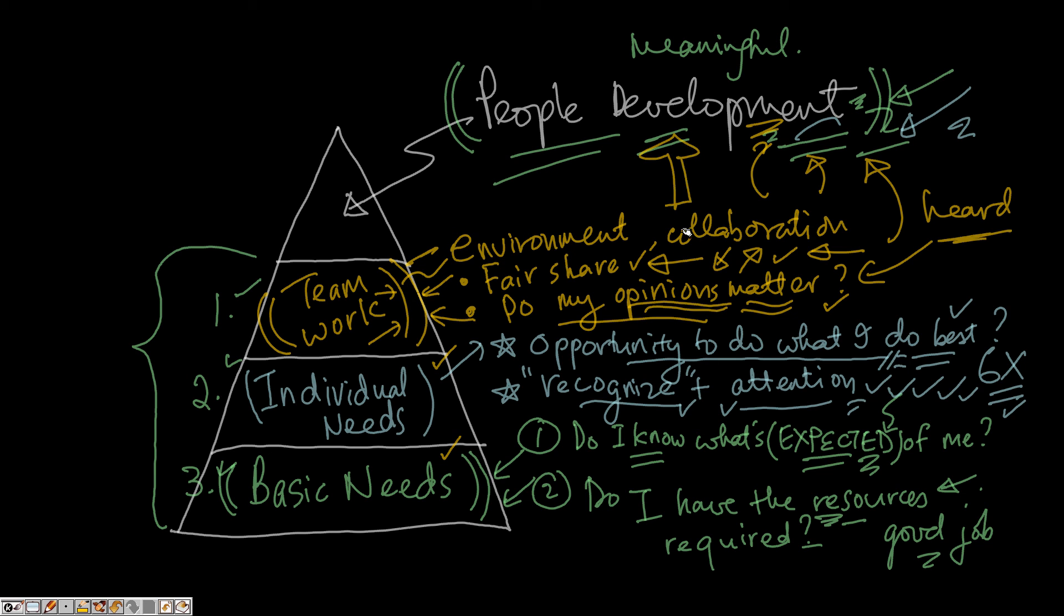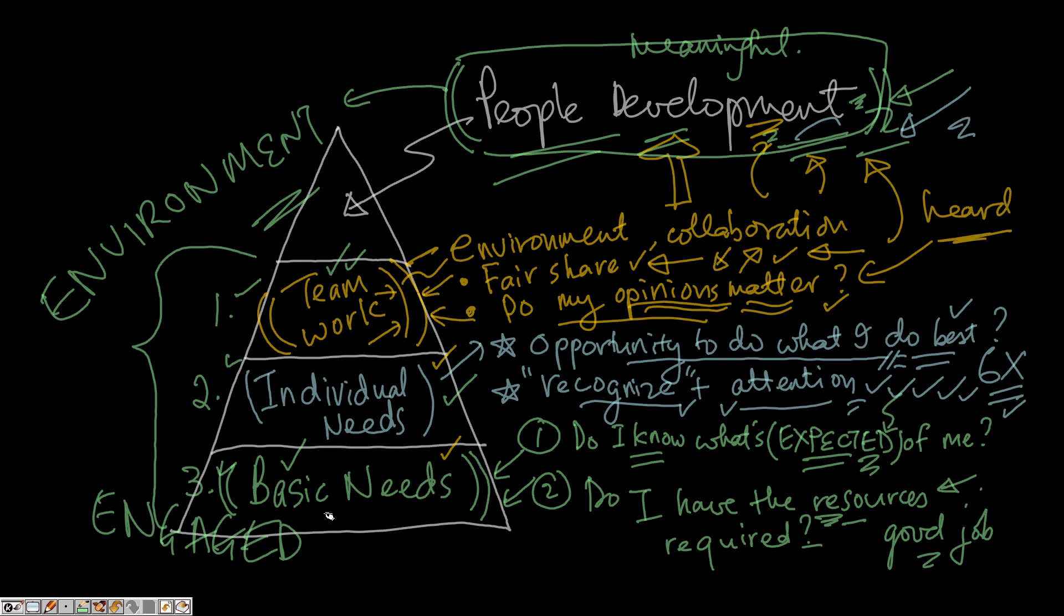So as you can see here, people development really requires the right environment to be in place. People development will only have its greatest maximum optimized return if fundamentally we meet basic needs, we focus on the individual employee first as an individual, and when we put in the elements where teamwork is encouraged. And when these three factors are in place, you have what we call an engaged work environment.